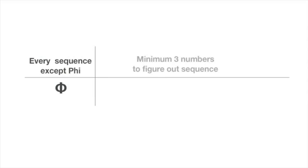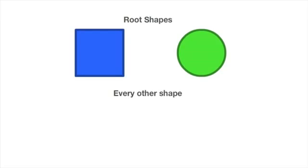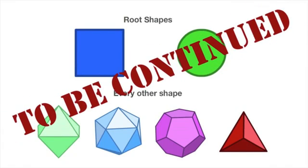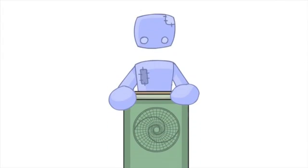Every mathematical sequence in existence needs a minimum of three numbers to figure out the sequence. Phi only needs two. It is the only one. Similar to how the circle and square are the source of all shape, but we'll get to that later on.